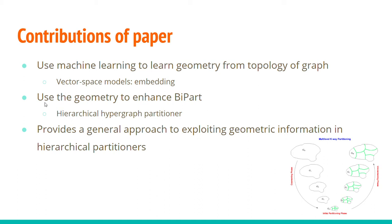Our contribution in this paper is that we use machine learning to learn geometry from the topology of the graph. Basically, we transform the nodes of our hypergraph into vector space — a process we call embedding — and we use this geometry to enhance our previous hypergraph partitioner, hype, which is a hierarchical hypergraph partitioner.